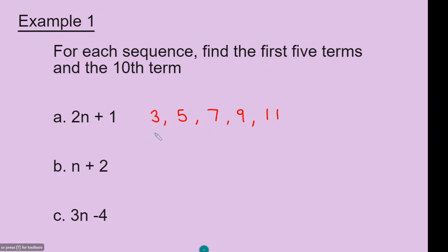So here we have the first five terms in the sequence. Now to find the tenth term, n will be 10. So you have 2 times 10 is 20, plus 1 is 21. So this is the tenth term.